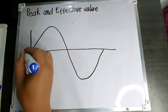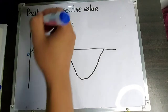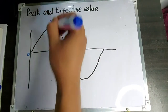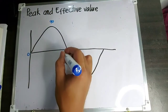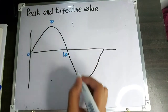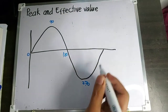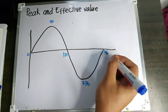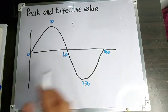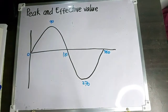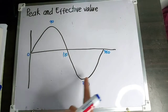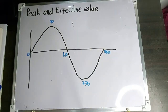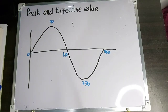Ito yung zero reference natin. Ito yung 90 degrees, ito yung 180, then 270, then 360 or zero. Ito yung one cycle. Sa one cycle natin, meron tayong peak value, effective value, then average value.